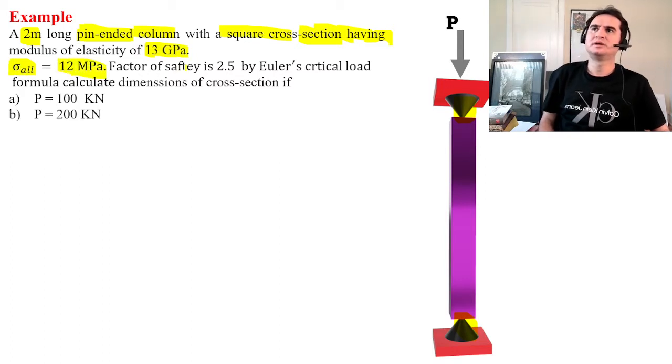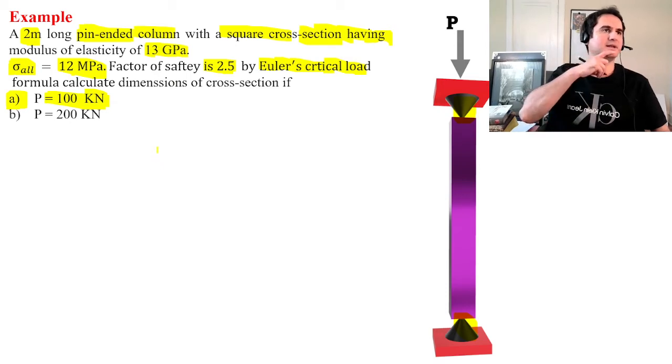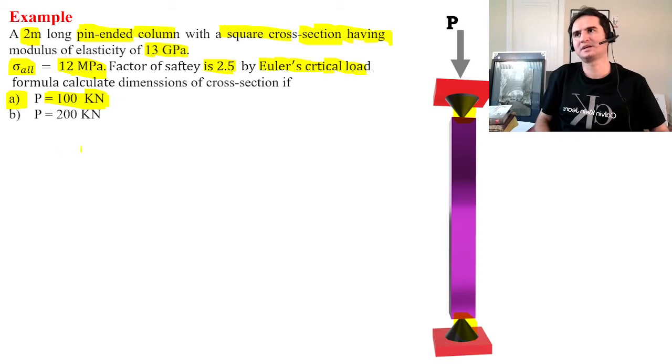The allowable or acceptable normal stress is 12 megapascals and a factor of safety of 2.5. By the use of Euler's critical load, we want to calculate the dimension of cross-section if P is 100 kN, and in a second condition if we double the force to 200 kN.